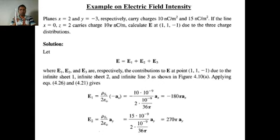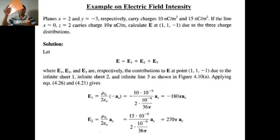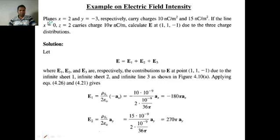The second plane given in the problem is y equal to minus 3. On the negative y-axis, this plane surface cuts at y equal to minus 3. Both surfaces are charged surfaces — they carry some charge. The x equal to 2 surface carries a charge of 10 nano coulombs per meter squared, which is surface charge density rho_s1. The second surface, y equal to minus 3, carries 15 nano coulombs per meter squared, denoted rho_s2.